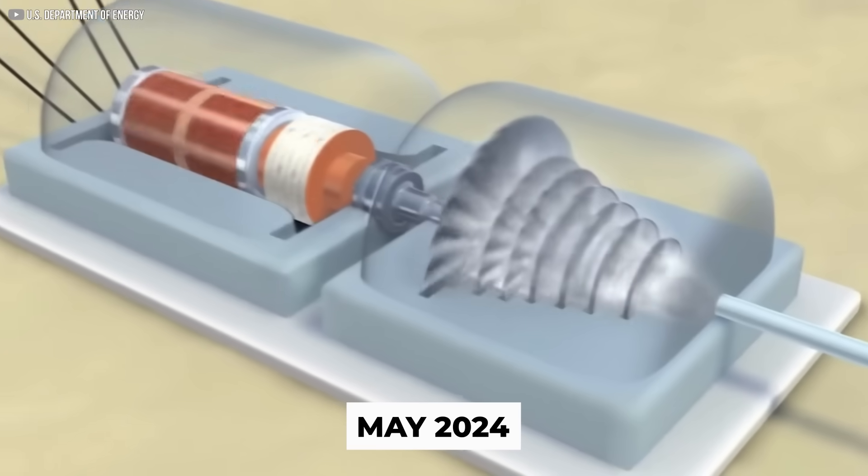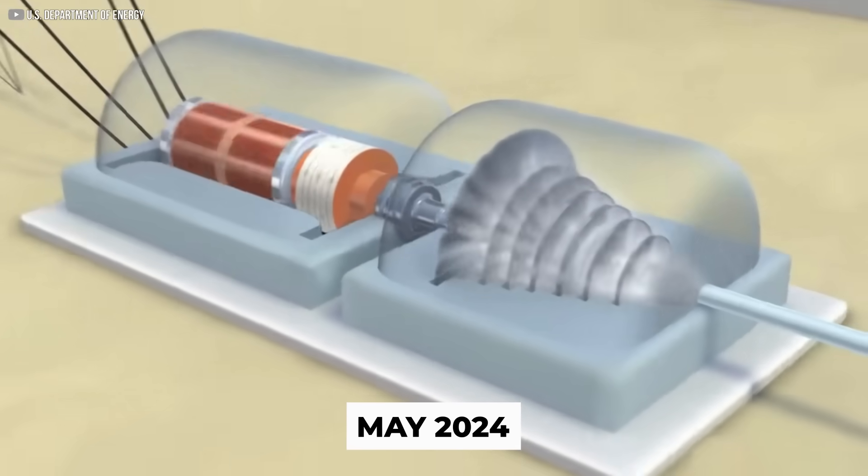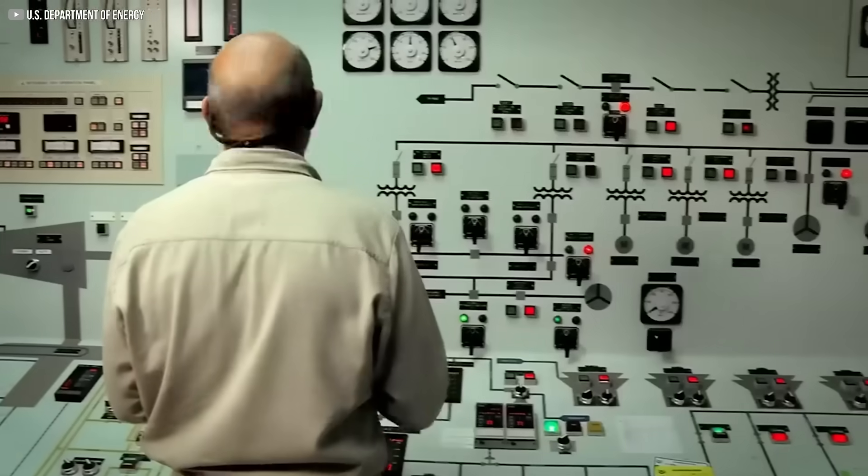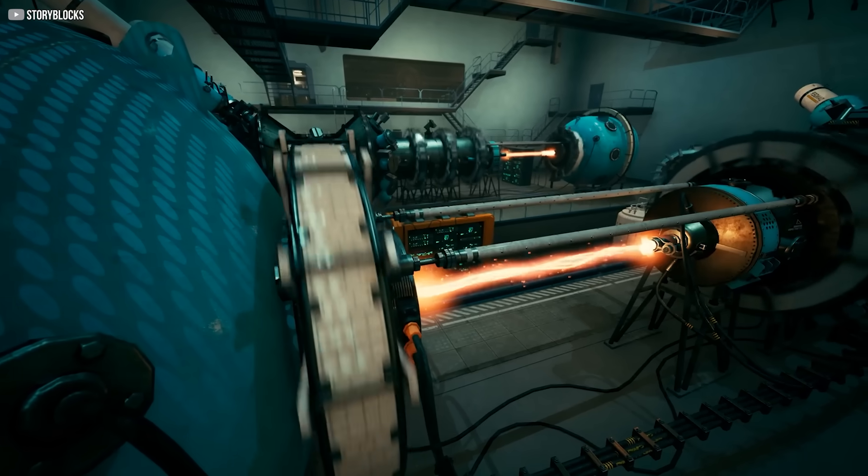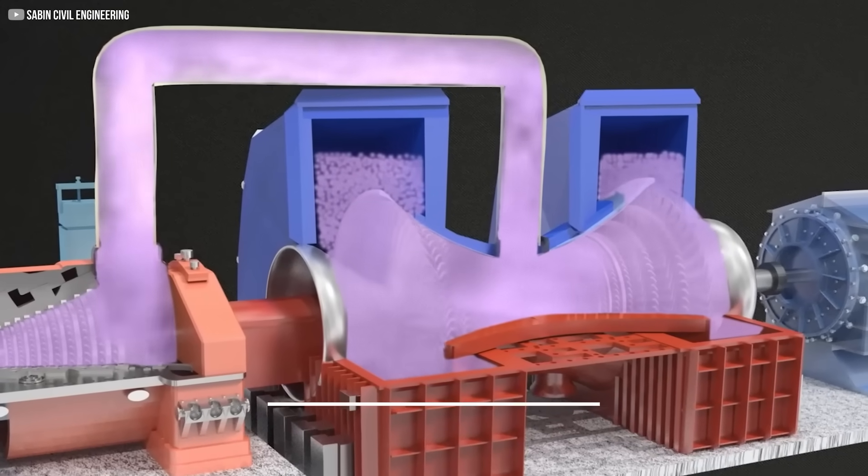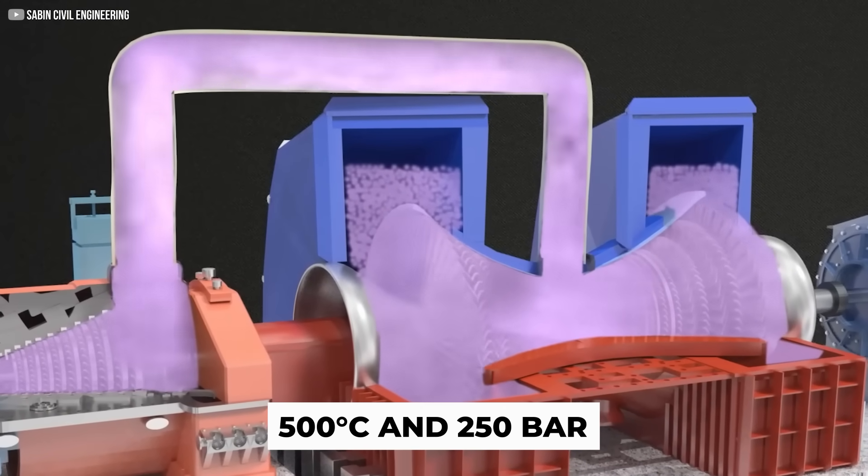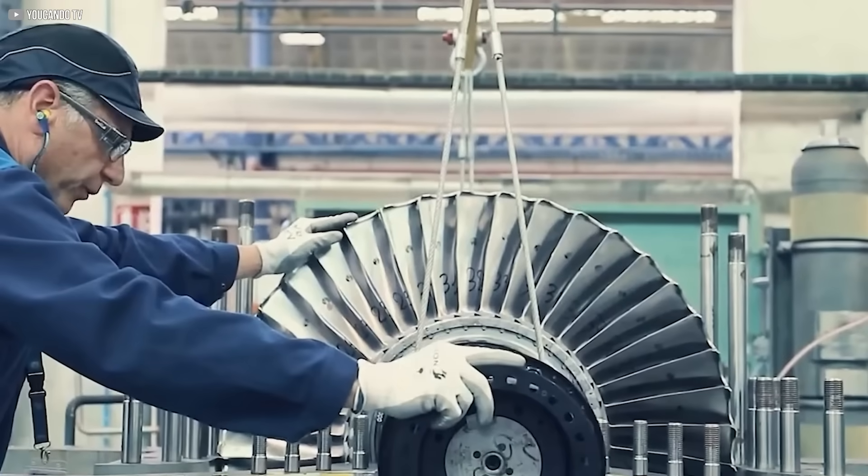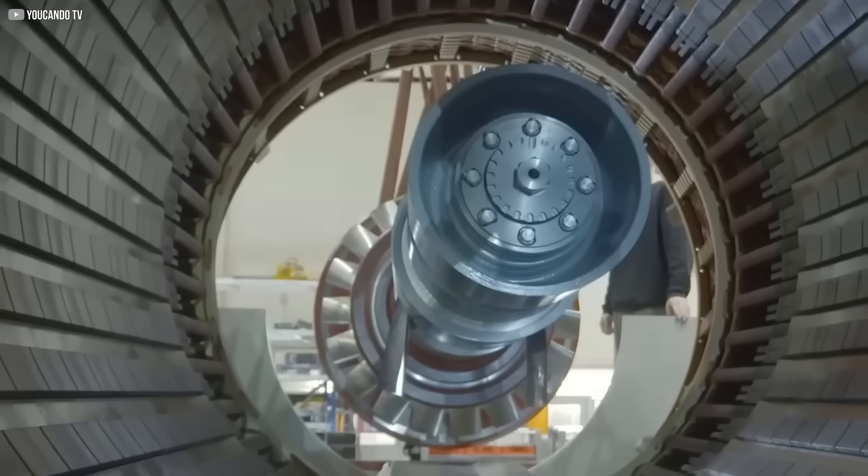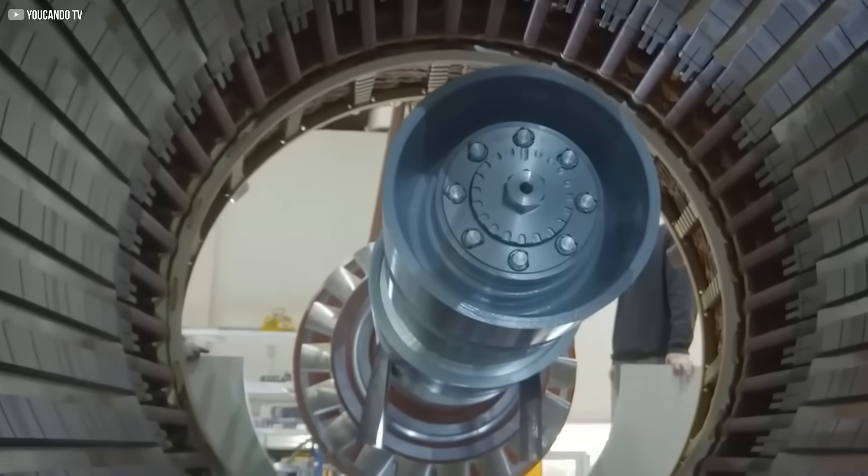By May 2024, the plant successfully produced electricity, generating four megawatts of grid-synchronized power. The turbine reached speeds of 27,000 rpm at an operating temperature of 500 degrees and 250 bar. This project highlights the practical possibilities of supercritical CO2 systems, showing that they can work in real-world environments.